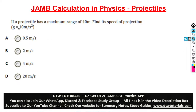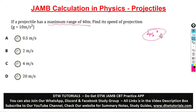Next question: if a projectile has a maximum range of 40 meters, find its speed of projection. At maximum range, you must know the angle of projection is 45 degrees. At maximum range, the formula becomes R_max equals u squared over g. So here we have to find u squared — we know our maximum range is 40 meters and g is 10.